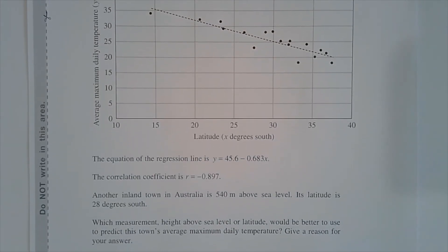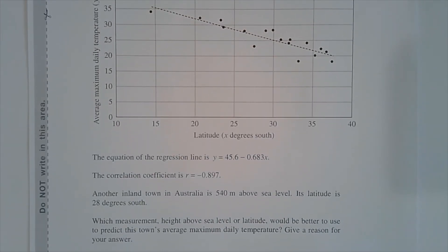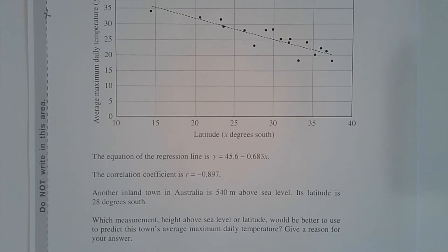Another inland town in Australia is 540 metres above sea level. Its latitude is 28 degrees south. Which measurement, height above sea level or latitude, would be better to use to predict this town's average maximum daily temperature? Give a reason for your answer.